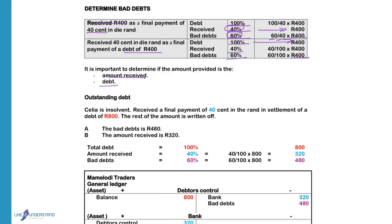Celia is insolvent and received a final payment of 40 cents in the Rand in settlement of a debt of 800. The total debt is 100%, the amount received is 40%, bad debts is 60%. The amount given is the total debt, so the total debt of 100% equals 800 Rand. The amount received will be 40 divided by 100 times 800. Bad debts will be 60 over 100 times 800, and that will give us 480 Rand.